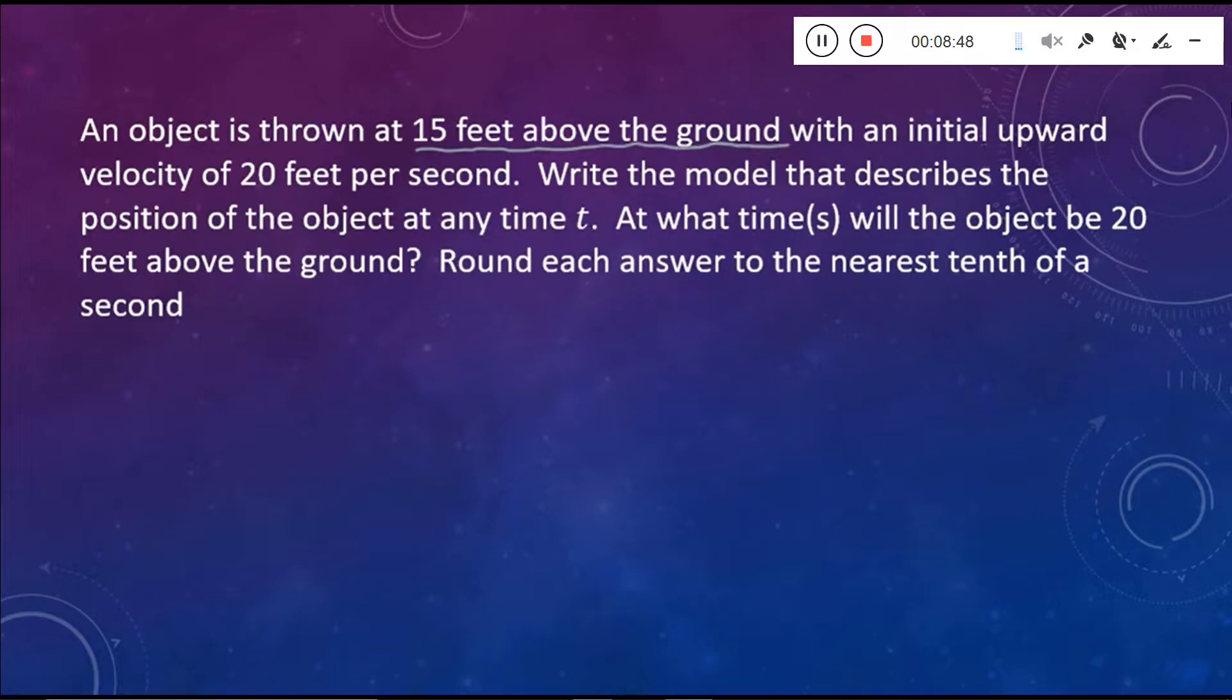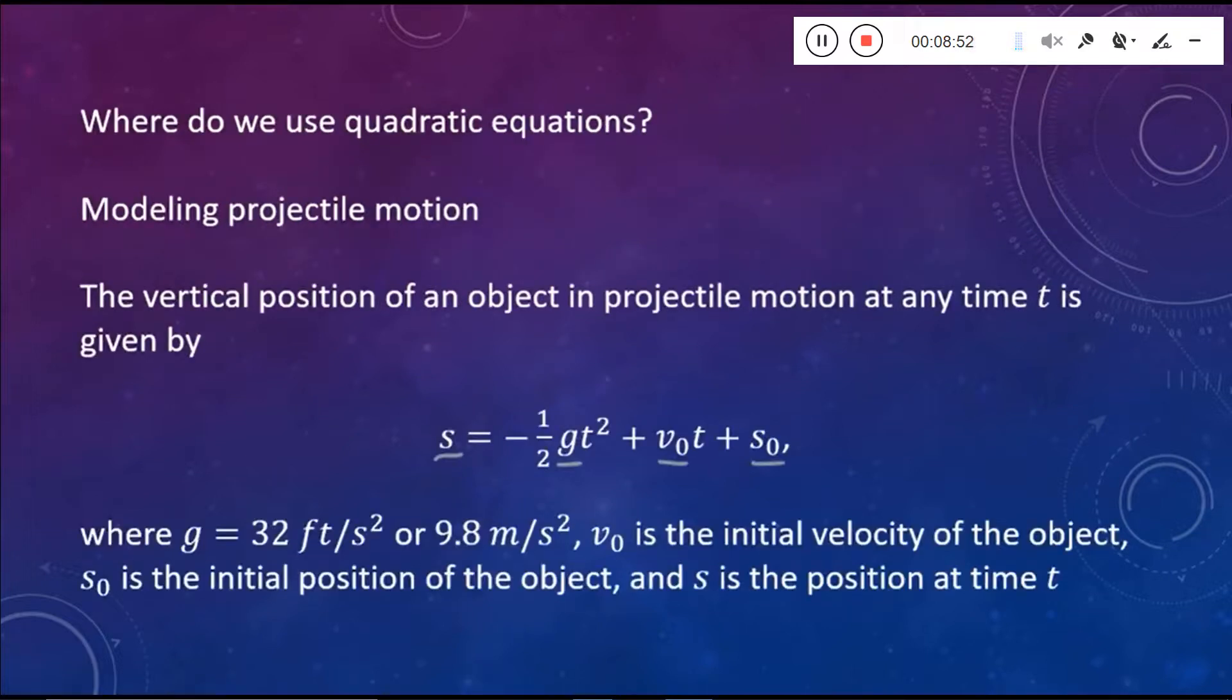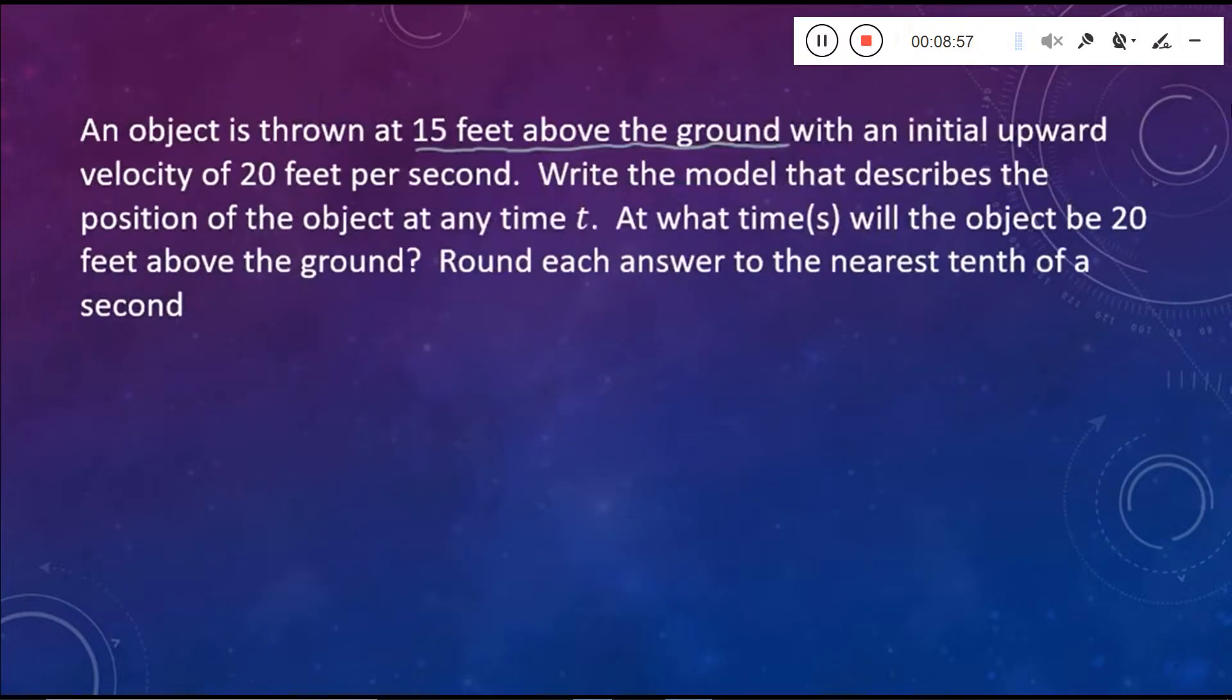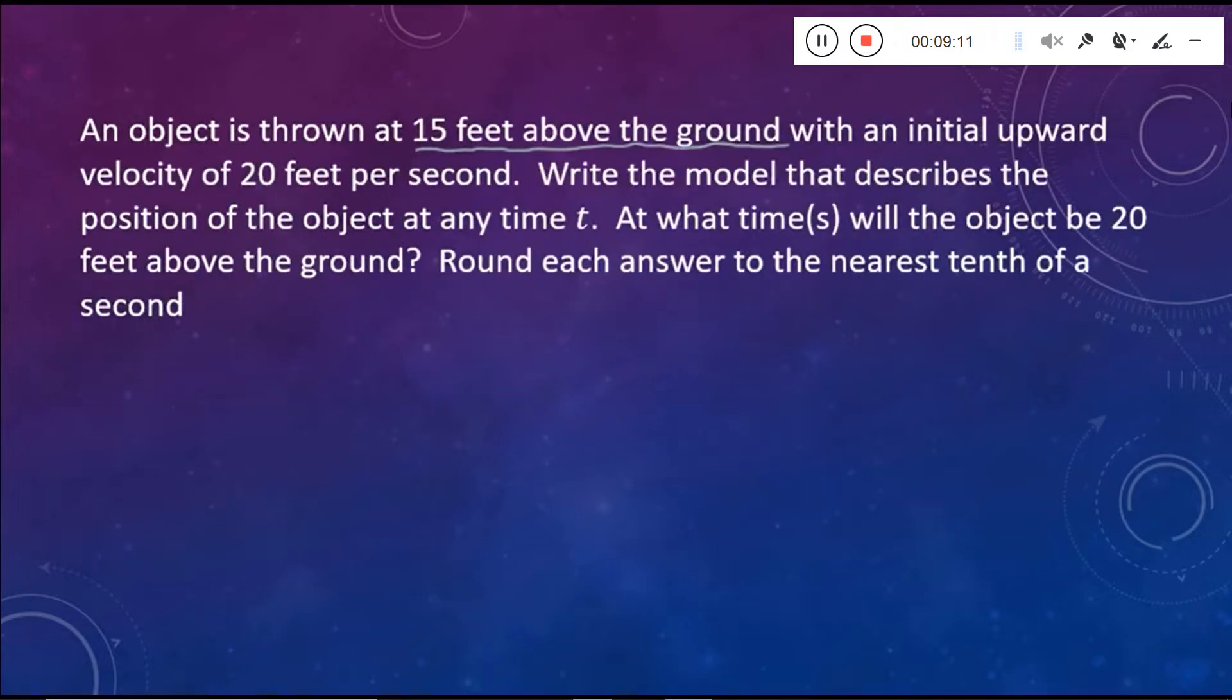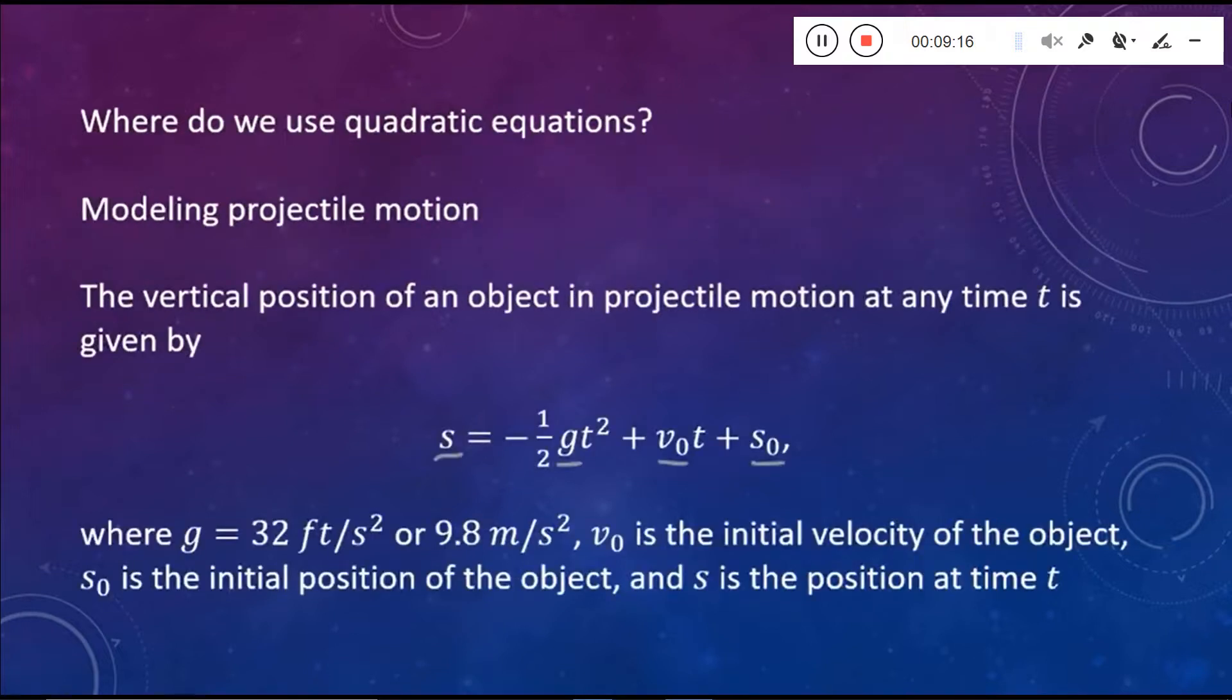We're told that it's thrown at 15 feet above the ground. So 15 feet is where we start at. That's our starting height. So that's going to be our s naught. And we're told that it's thrown with an initial upward velocity of 20 feet per second. Well, upward initial velocity is v naught. So v naught is going to be 20.